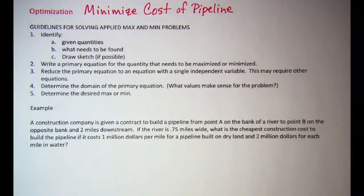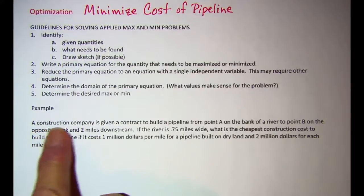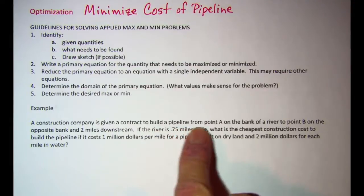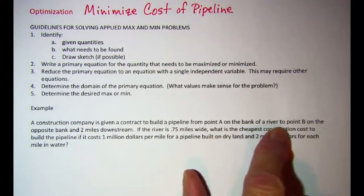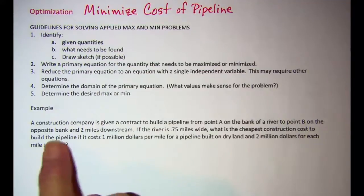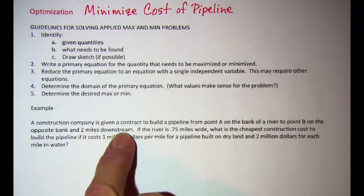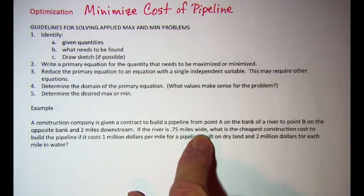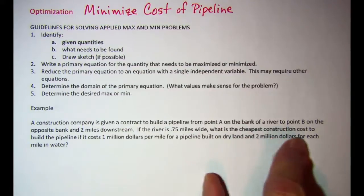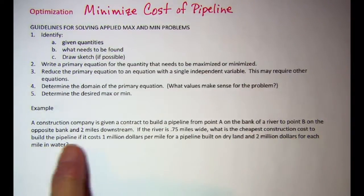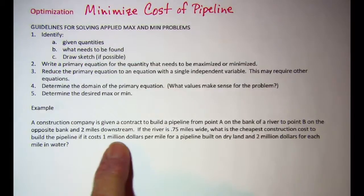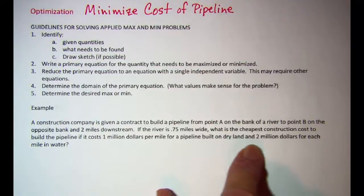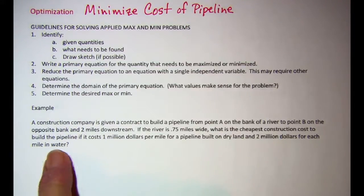The problem we'll be looking at is: a construction company is given a contract to build a pipeline from point A on the bank of a river to point B on the opposite bank and 2 miles downstream. The river is 0.75 miles wide. What is the cheapest construction cost to build the pipeline if it costs $1,000,000 per mile on dry land and $2,000,000 per mile in water?